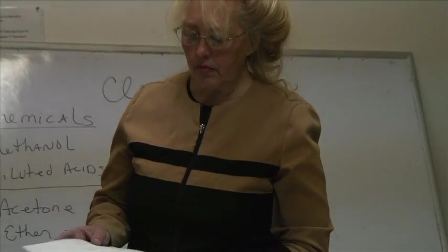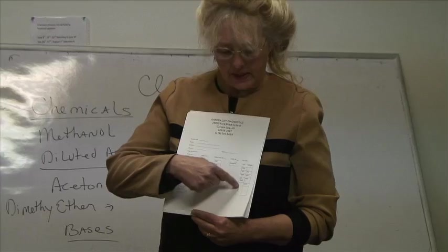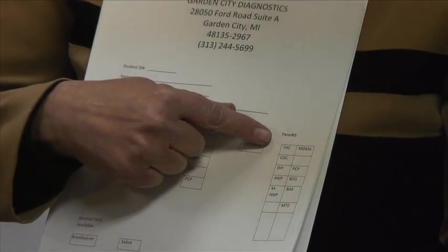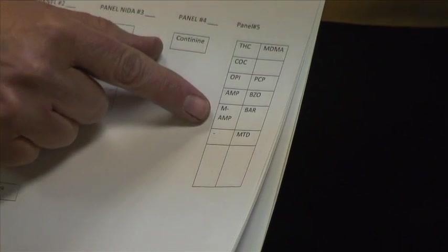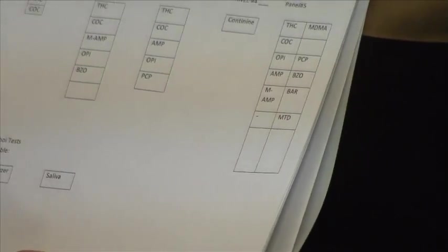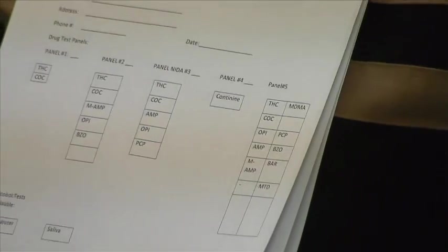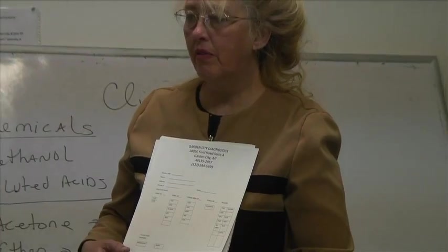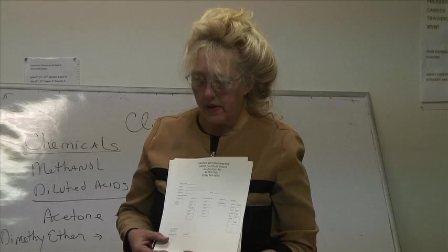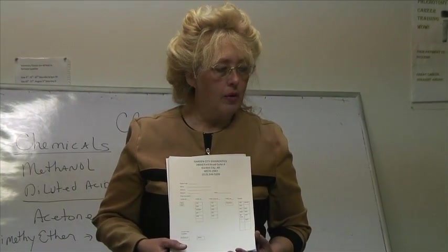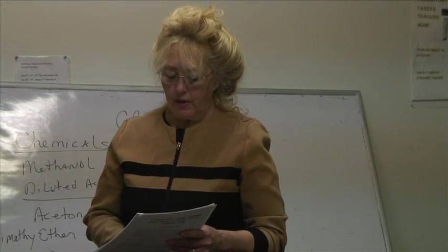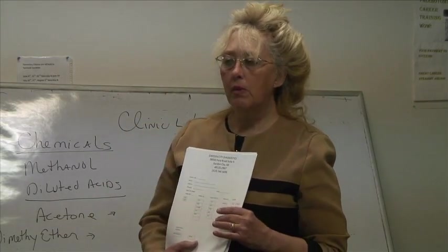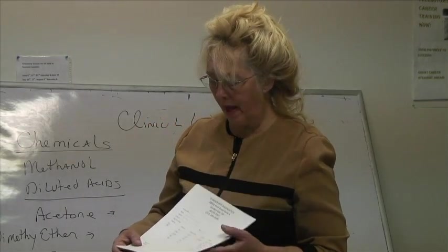Once they sign the consent, they give permission to test their urine. For Garden City Diagnostics, our 10-panel drug screen form covers: THC, MDMA, cocaine, opiates, PCP, amphetamines, methamphetamines, benzodiazepines, barbiturates, and methadone or morphine. Methadone was given in clinics for heroin addicts as a more controlled alternative. Some places do five-panel screens, but we find the 10-panel most comprehensive.